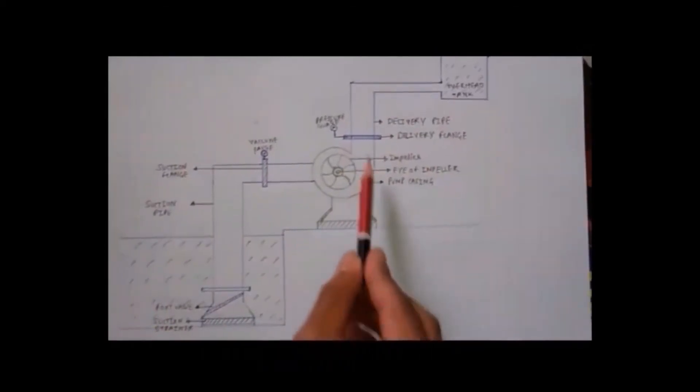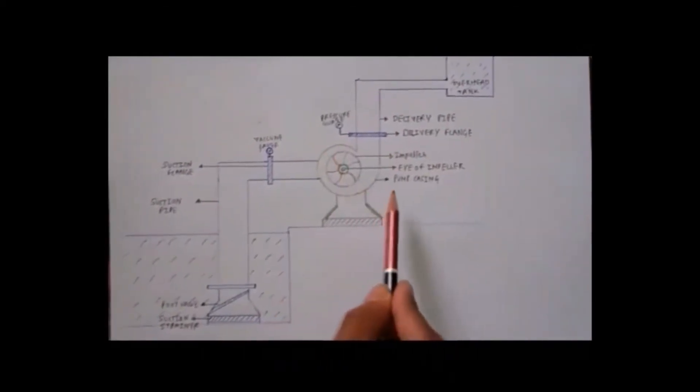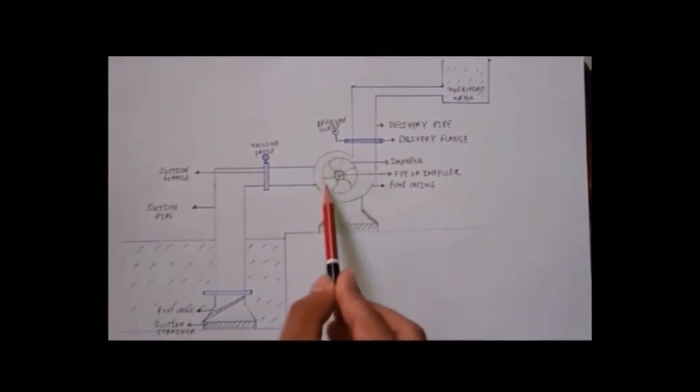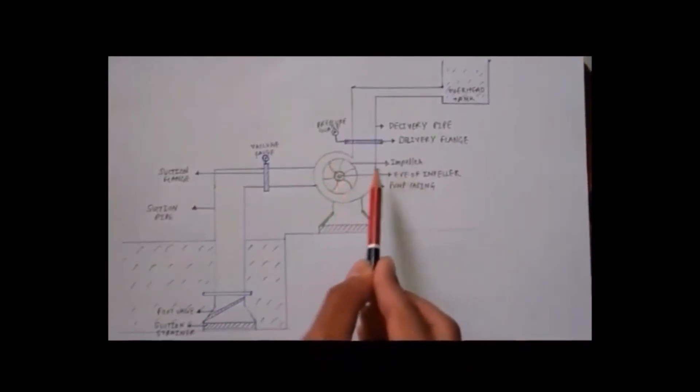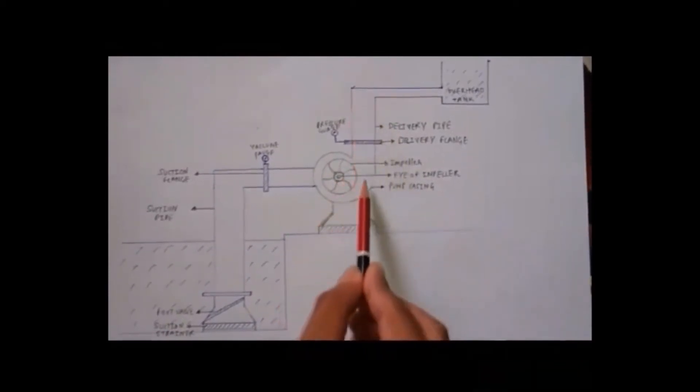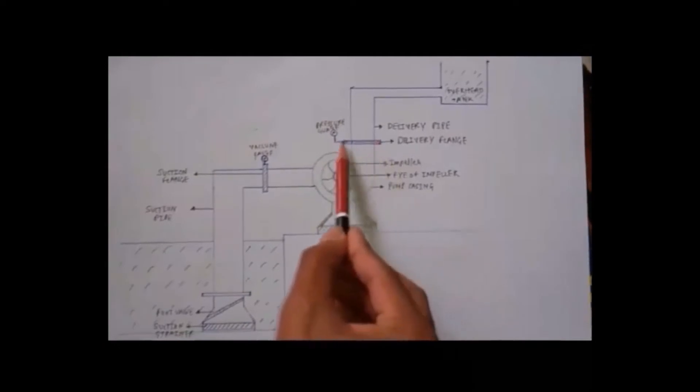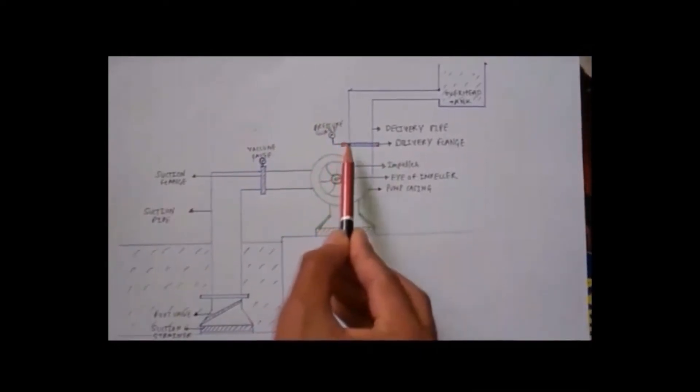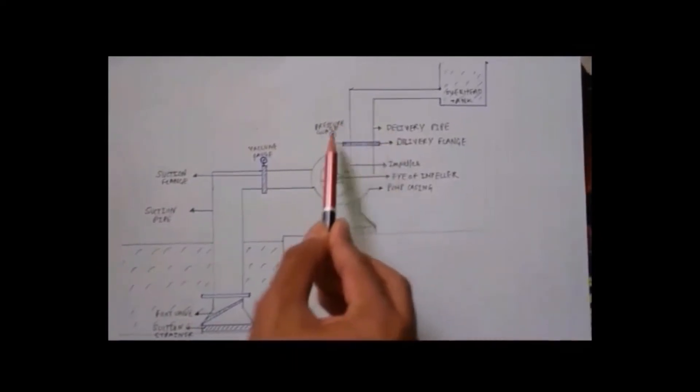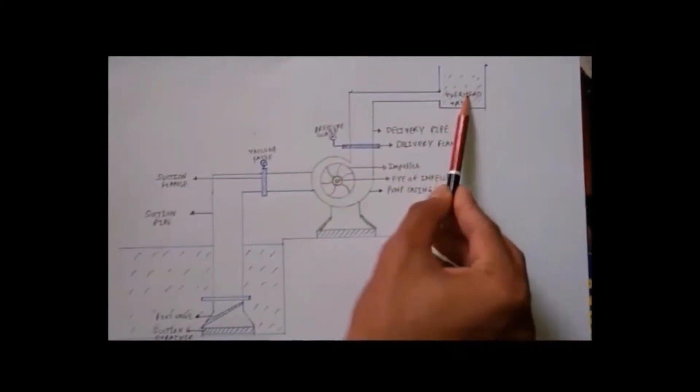The main component in this assembly is the centrifugal pump. It has a casing which is the outer covering of the pump. This is an impeller, and this is an eye of the impeller which is located at the centre of that pump. This is a delivery pipe, this is a delivery flange, and this is a pressure gauge which shows the increasing pressure at this point.